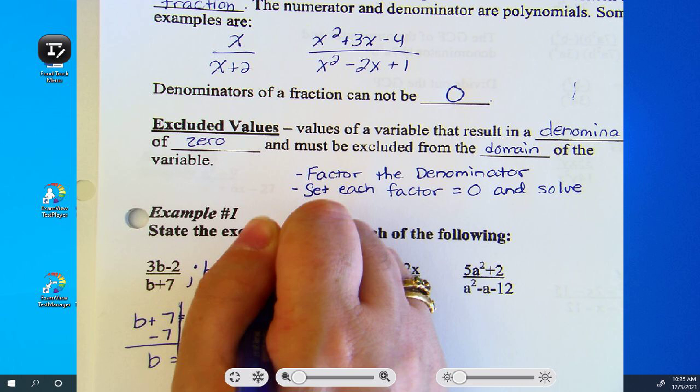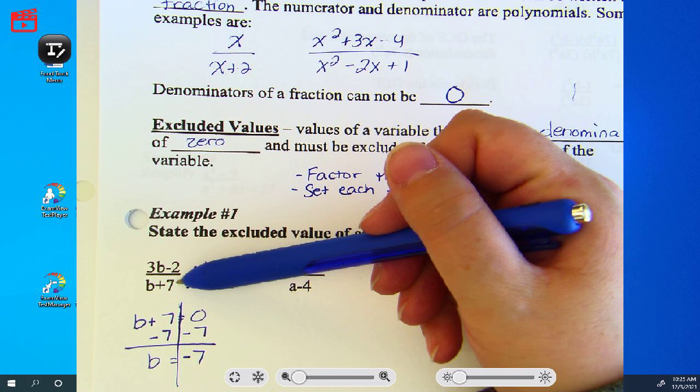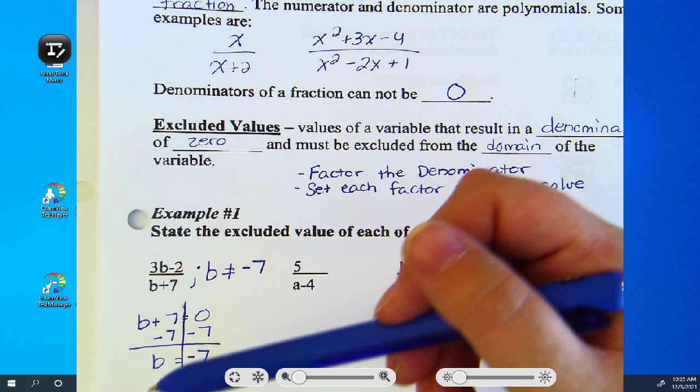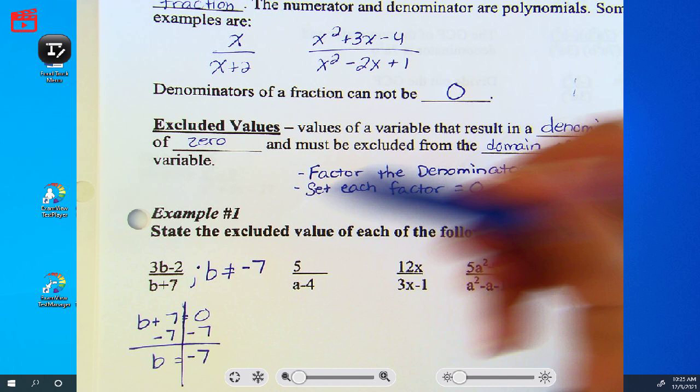So, this states that b cannot equal negative 7. That's what we just found, what b cannot equal. Because if b equals negative 7, and you put that in, what's negative 7 plus 7? 0. And the denominator can't be 0. So, that's why we have to tell everyone that you can use any number for b except negative 7, because negative 7 makes it undefined. And that's how they write it. They'll do a semicolon, and the variable cannot equal.